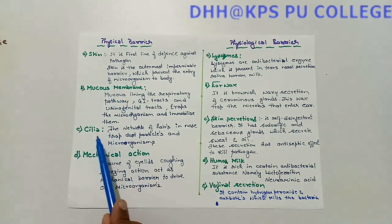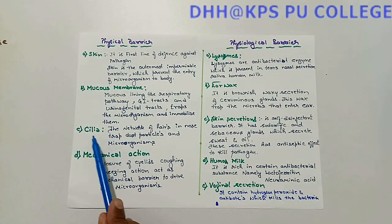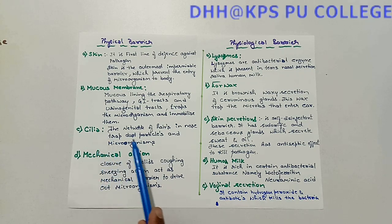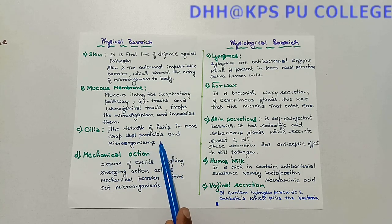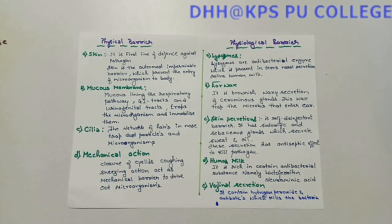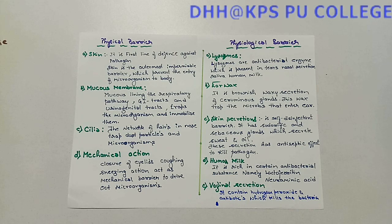The next physical barrier is cilia. Cilia is a network of hairs present in the ears and nose. When dust or microorganisms enter the nose or ears, cilia traps and kills them.